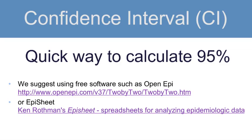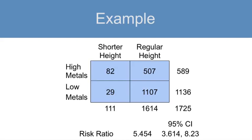So, using the free software, we plug in the numbers to our 2x2 table and calculate the 95% confidence interval. In this example, for the risk ratio of 5.45, the 95% confidence interval is 3.614 to 8.23.